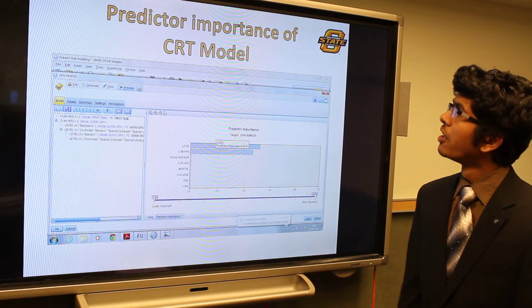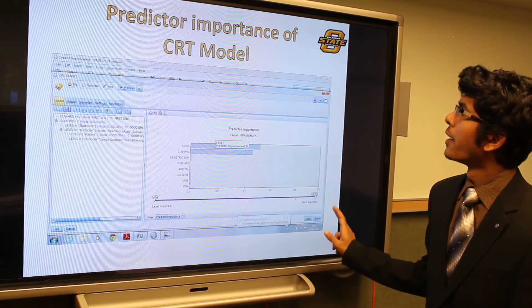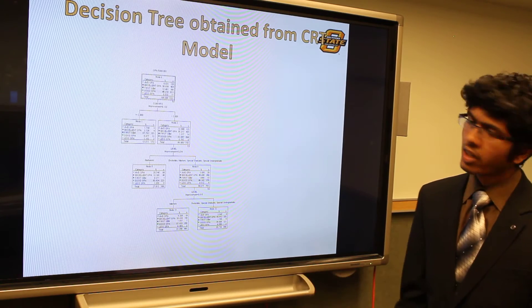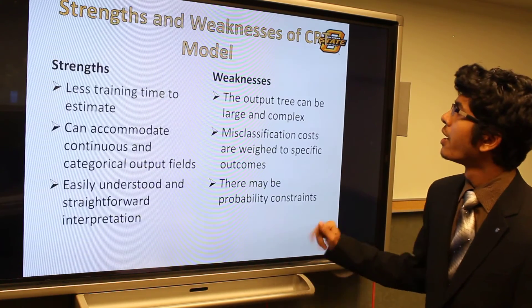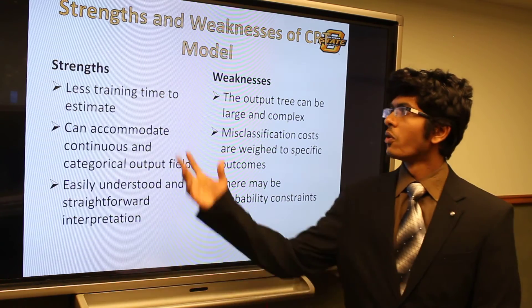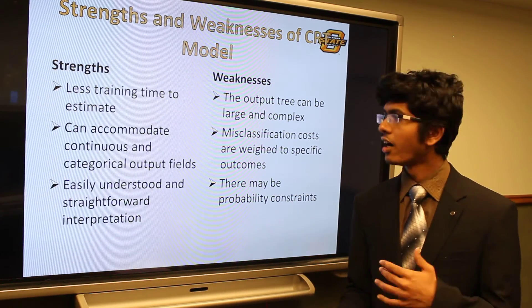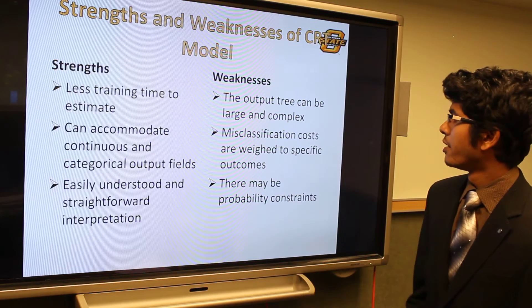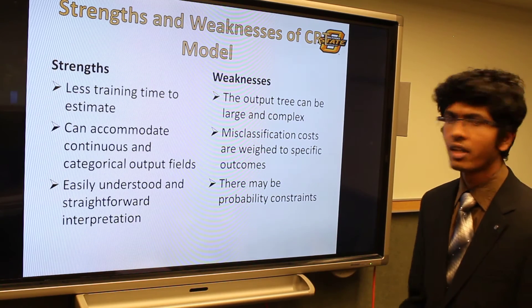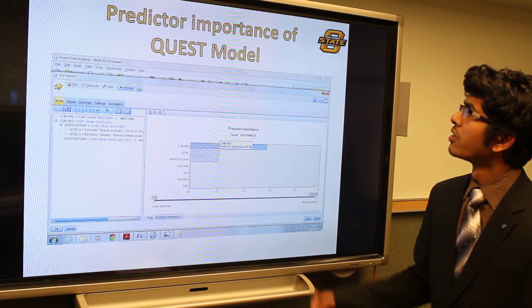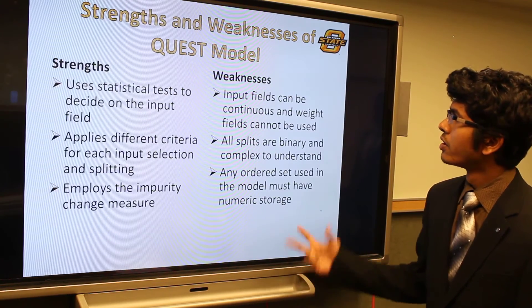Here is another output from the CRT model, again showing predictor importance values and its decision tree. An interesting feature of the CRT model is that the split is binary. Its strengths are that it takes less time to estimate and can accommodate continuous and categorical output fields, unlike the C5.0 model. Disadvantages include many probability constraints and a large, complex output tree. Similarly, this is the output from the Quest model, showing its decision tree and strengths and weaknesses.